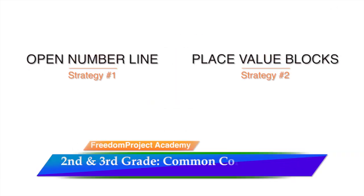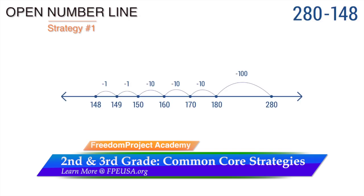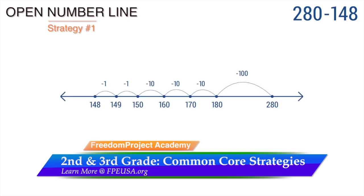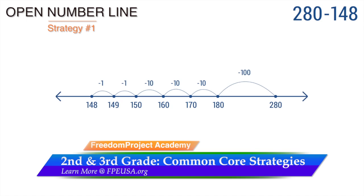Common Core teaches arithmetic by presenting multiple strategies. The first two we'll discuss are intended for 2nd and 3rd grades. The first is the open number line. This does not require knowledge of facts or the use of borrowing. We simply count down the number line and add up our leaps to solve the problem.